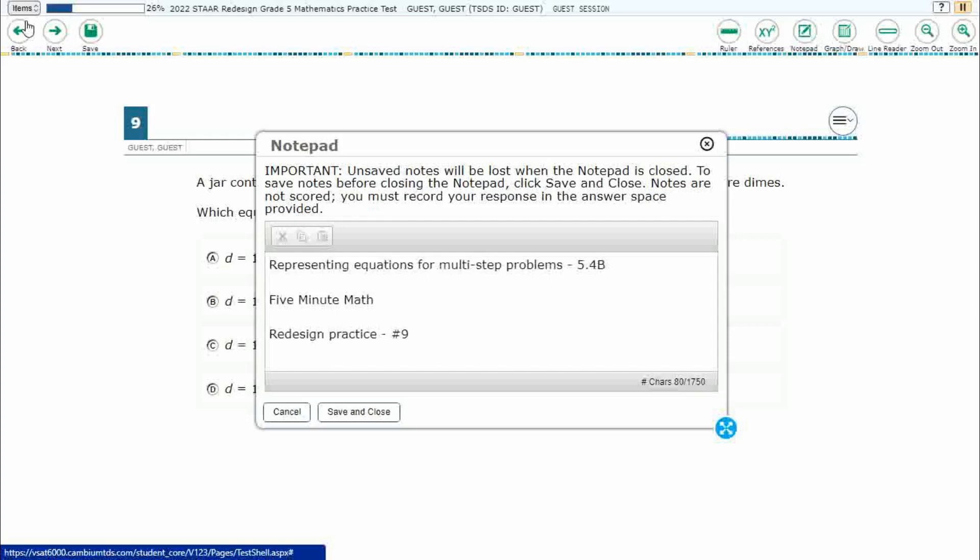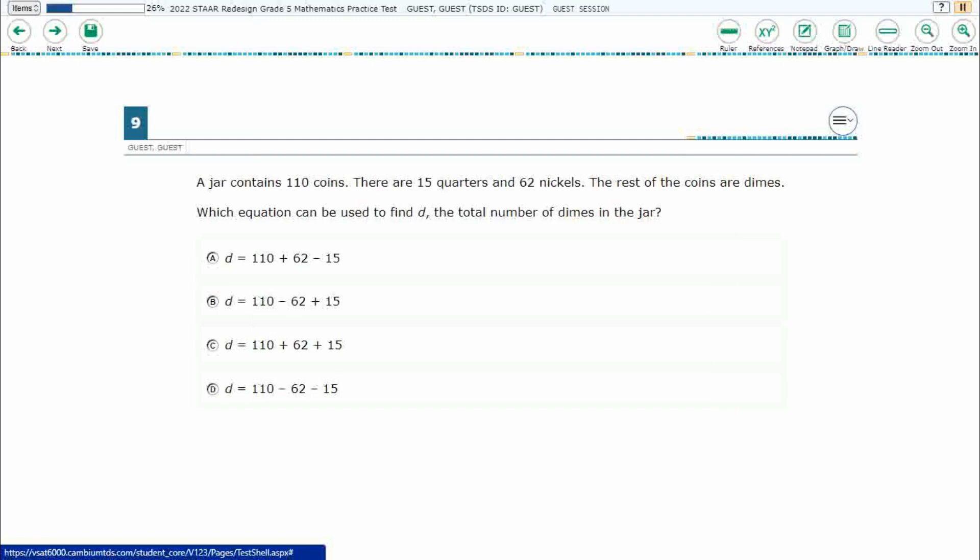Hello and welcome to 5-Minute Math. Today we are looking at the fifth grade concept of representing equations for multi-step problems. This is standard 5.4b in the great state of Texas and we are using item number nine of the redesigned practice online STAR test.